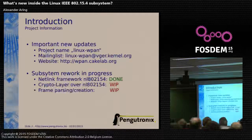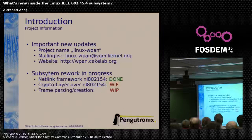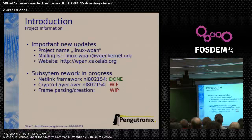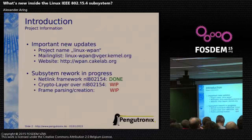Now let's start the presentation. Important new project updates: last year the name was Linux Zigbee, but we don't name the project Zigbee anymore. We are now Linux WPAN, and we have a new mailing list hosted on kernel.org, and a new website wpan.kernel.org. Currently we have a subsystem rework in process because the current subsystem was not very nice to use. This contains a netlink framework — NL802.154, which I will talk about later. We have a crypto layer, but we can't easily access this crypto layer from user space, so we need to add more support for it.